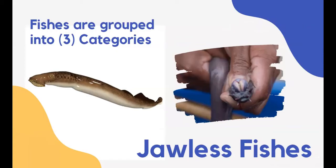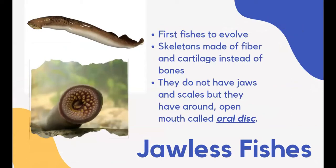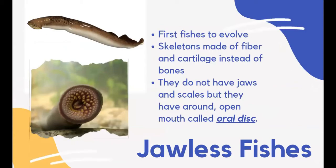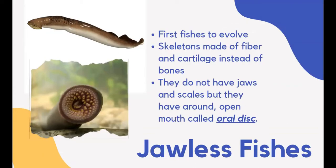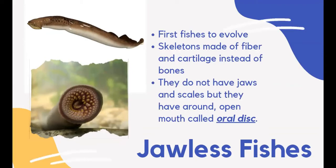Based on certain characteristics, fishes are grouped into three categories: jawless fishes, cartilaginous fishes, and bony fishes. The first fishes to evolve look like eels. Their skeletons are made of fiber and cartilage instead of bones. They do not have jaws or scales, but have a round open mouth called oral discs. Lampreys use their mouth and teeth to attach themselves to other fishes and suck their blood. Hagfish mostly feed on dead animals on the seafloor and secrete mucus to threaten predators.